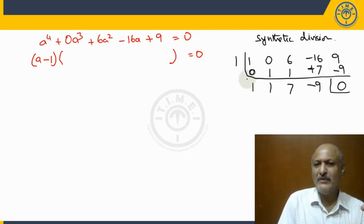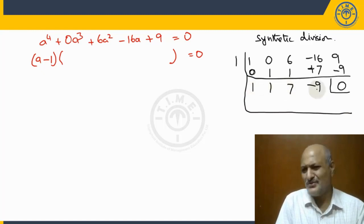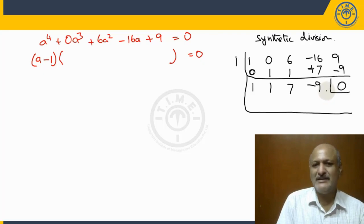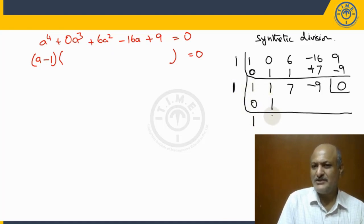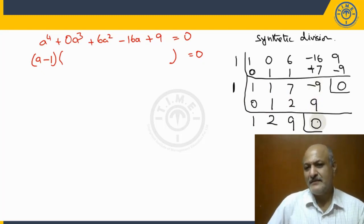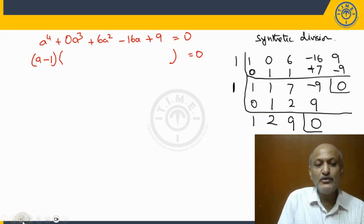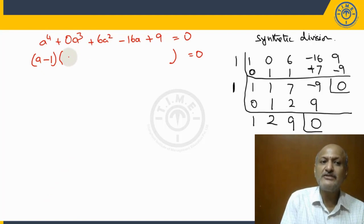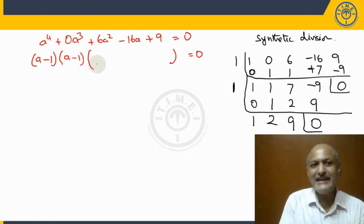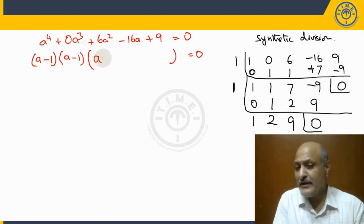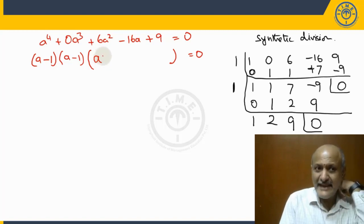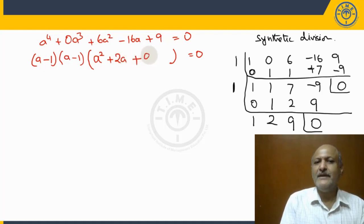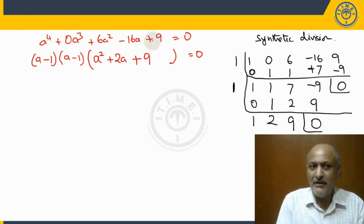Performing synthetic division again with root 1 on the quotient 1, 1, 7, -9: 1 + 0 = 1; 1×1 = 1; 1 + 1 = 2; 1×2 = 2; 7 + 2 = 9; 1×9 = 9; -9 + 9 = 0. So there are two factors of (a - 1), meaning 1 is a repeated root. The remaining quadratic factor is a² + 2a + 9.